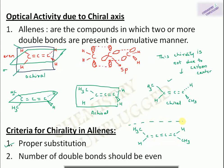The criteria for chirality in allenes: there should be proper substitution and the number of double bonds should be even. If the number of double bonds is odd, the substituents on both ends will be in the same plane, and a horizontal plane of symmetry containing the molecular axis will exist — making them achiral. So the number of double bonds must be even for allenes to be optically active.